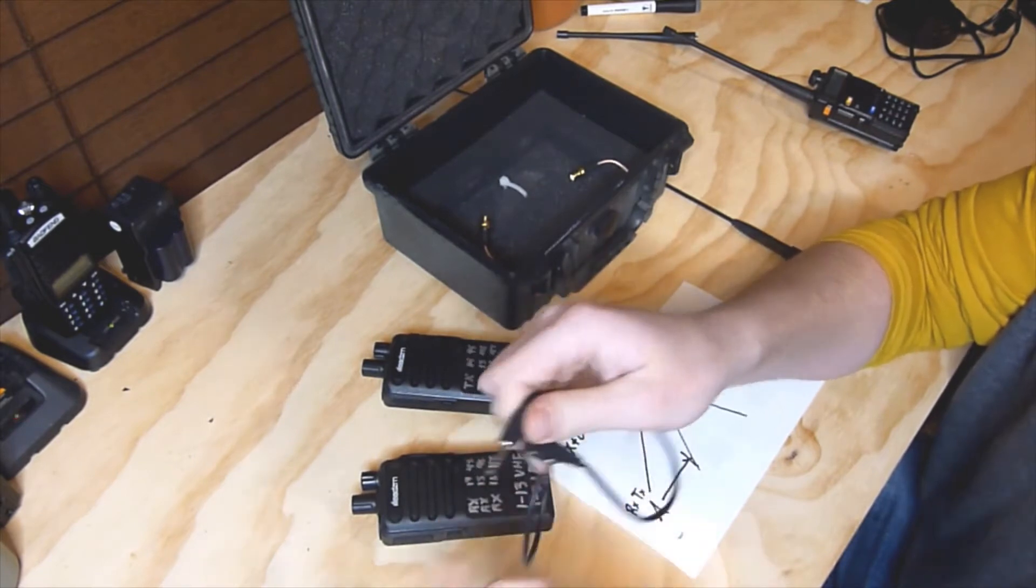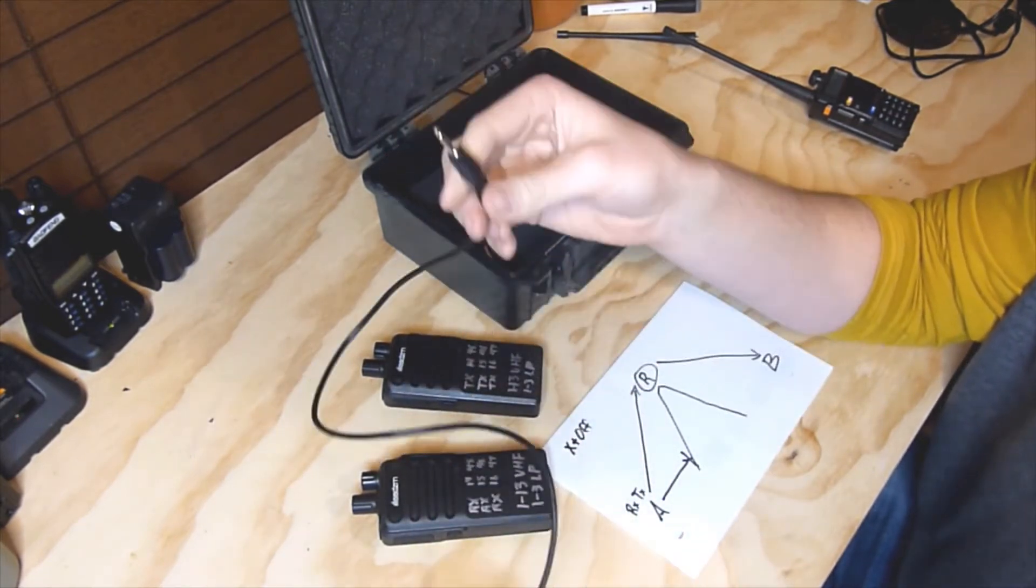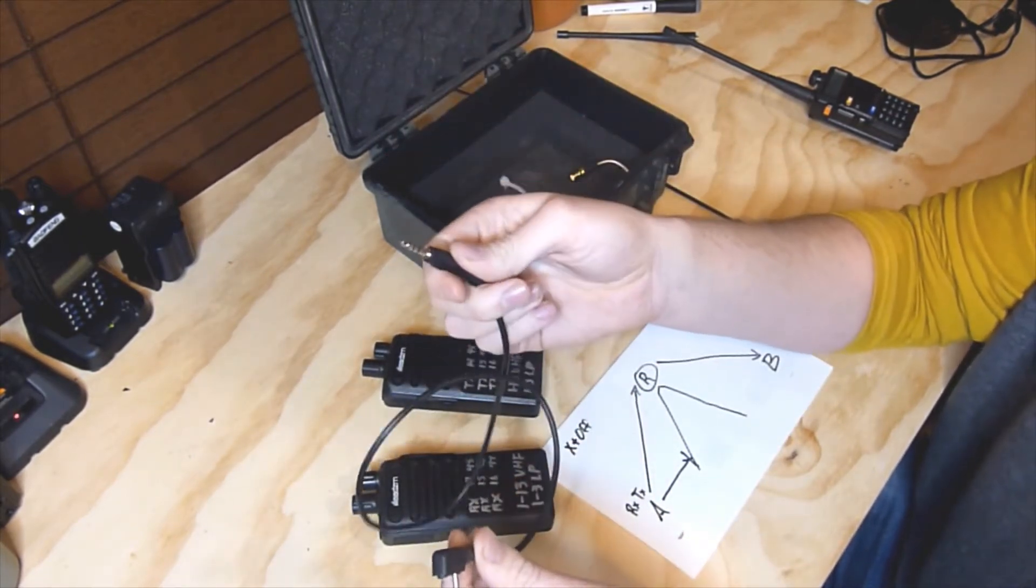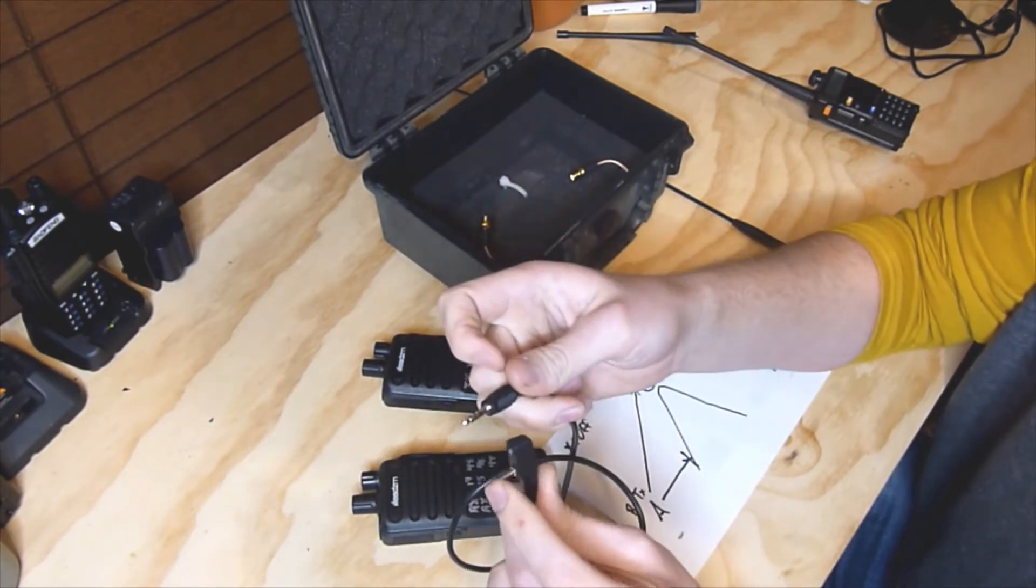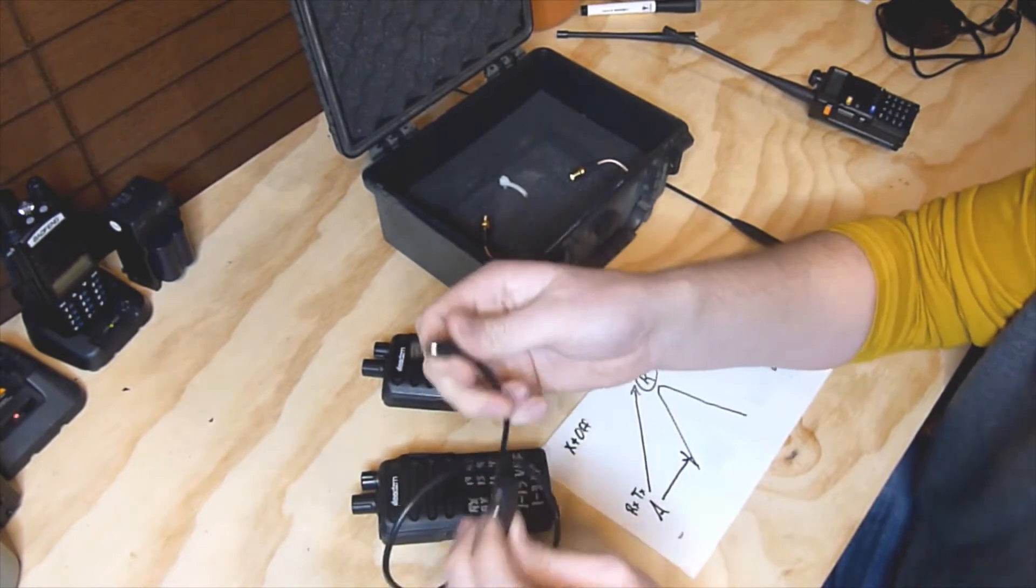So you can get adapters that don't have that second prong. It's just the larger one to the smaller one, and that'd be better and just use the VOX. But coming over here to the box, what we have here is just pretty much...